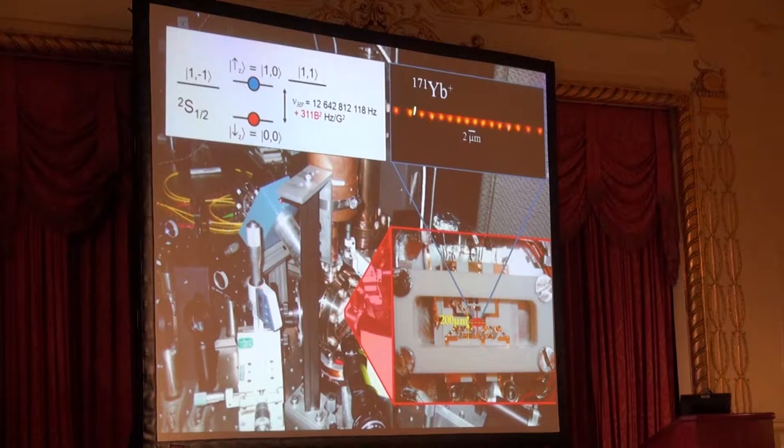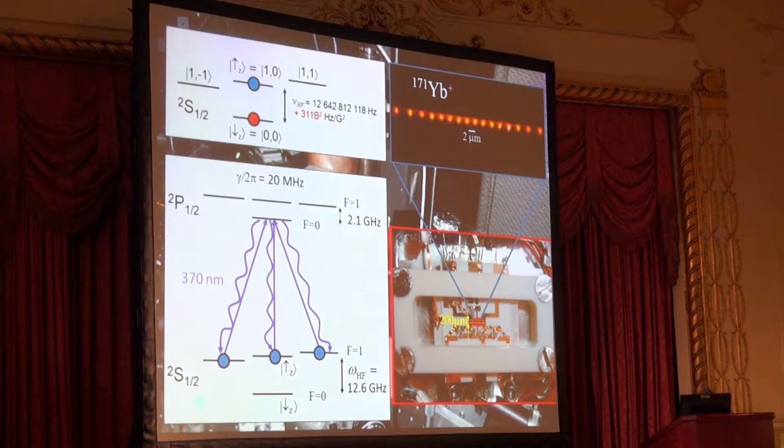If you zoom down into the ground state electronic structure of ytterbium, you find these two hyperfine states here. We label them up and down, and they're split by about 12.6 gigahertz and relatively insensitive to external magnetic fields. This gives us very long qubit coherence times of a few seconds without having to worry about any magnetic shielding around our trap apparatus.